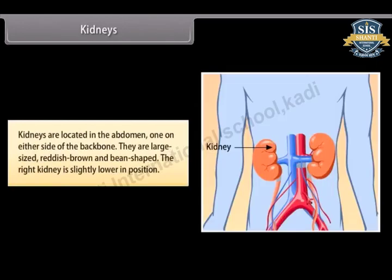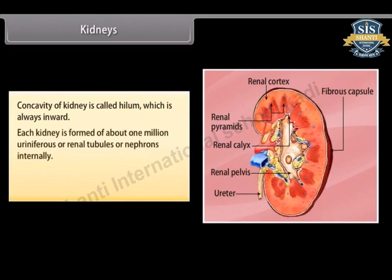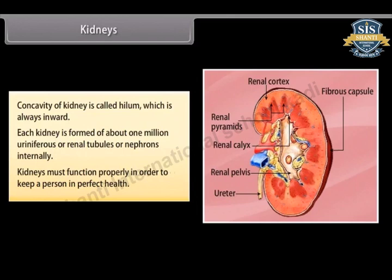Kidneys are located in the abdomen, one on either side of the backbone. They are large-sized, reddish-brown, and bean-shaped. The right kidney is slightly lower in position. The concavity of kidneys is called the hilum, which is always inward. Each kidney is formed of about 1 million uriniferous or renal tubules, called nephrons, internally.